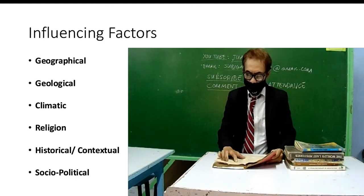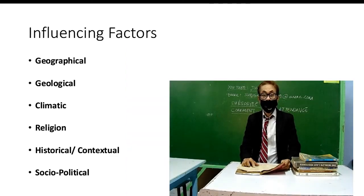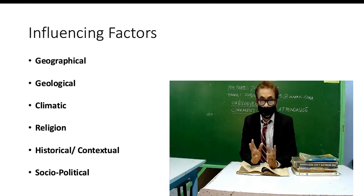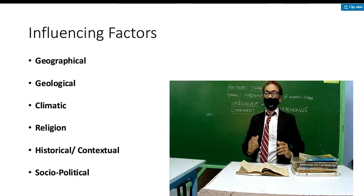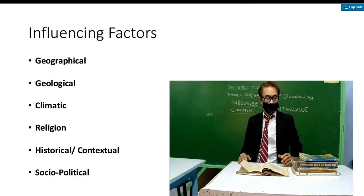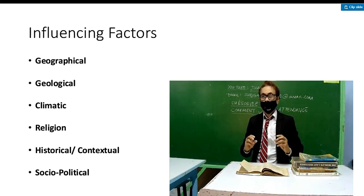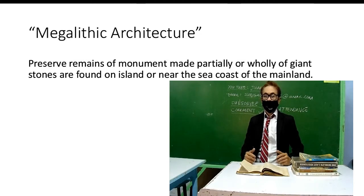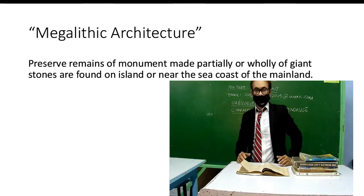The six influencing factors, not in order, are: geographical, geological, climatic, religion, historical, and socio-political. For example, geography determines the location — whether hot or cold — resulting in different designs. Geological factors determine what materials are most available locally. In Greece, there was abundant limestone and marble, so those were used in architecture. In tropical countries like the Philippines, timber is abundant, so wood architecture is common.